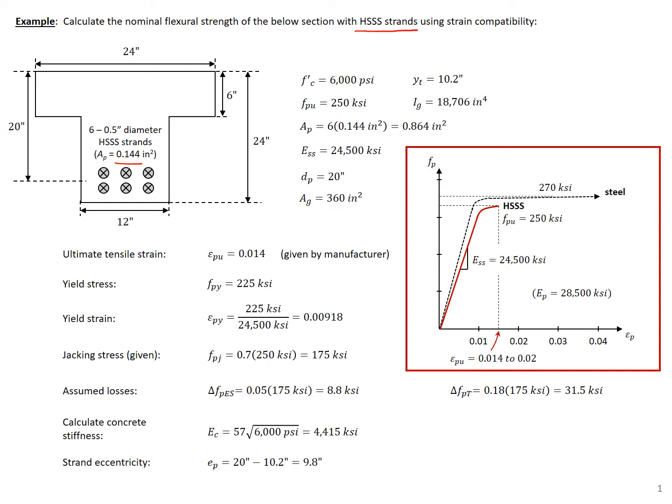The stress-strain curve for our high-strength stainless steel strands is different than conventional steel strands. We have a lower stiffness — 24,500 rather than 28,500 — and much less ductility, with our stainless steel strands failing at between 0.014 and 0.02 strain. With conventional steel strands, they won't rupture until about 0.04 or above.